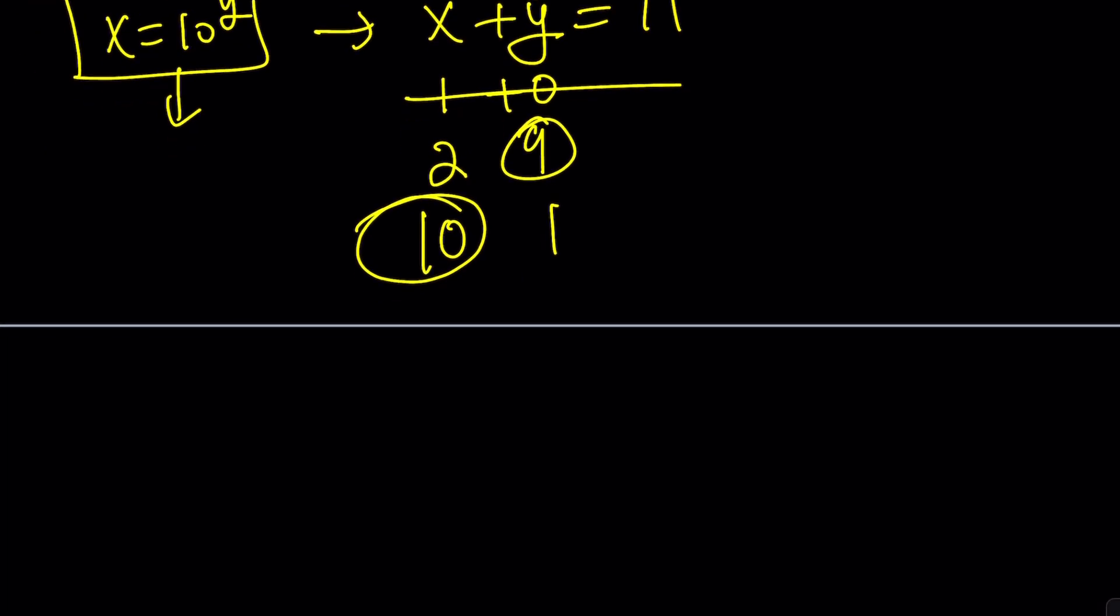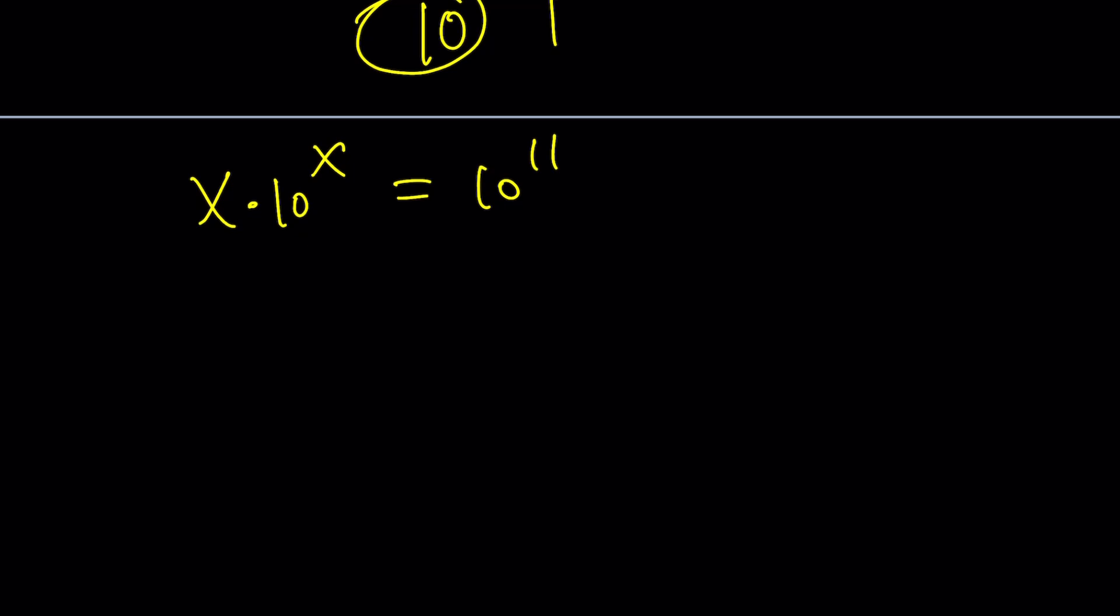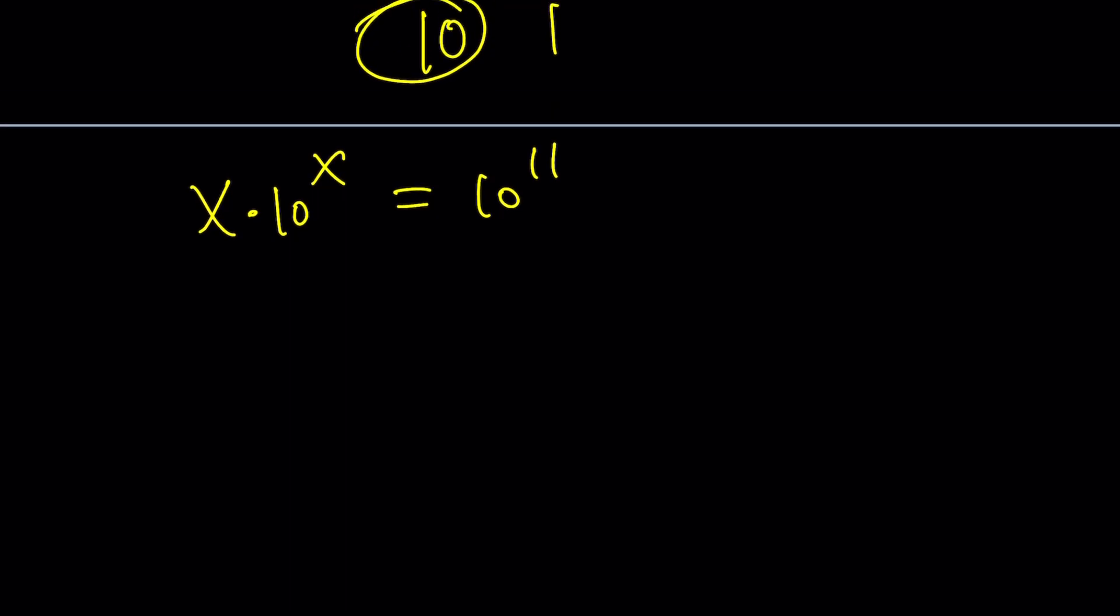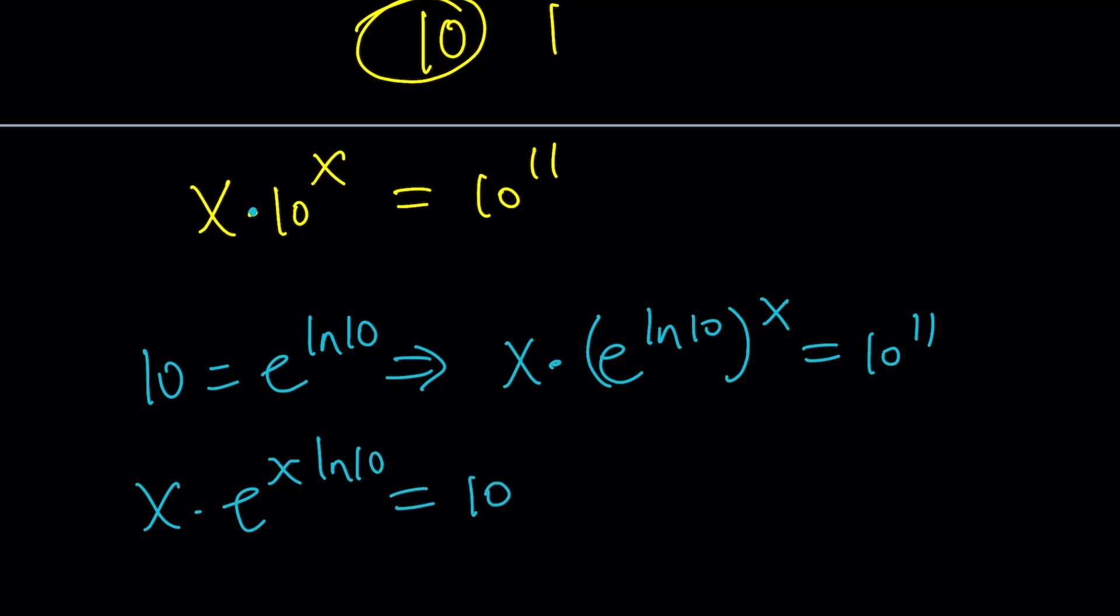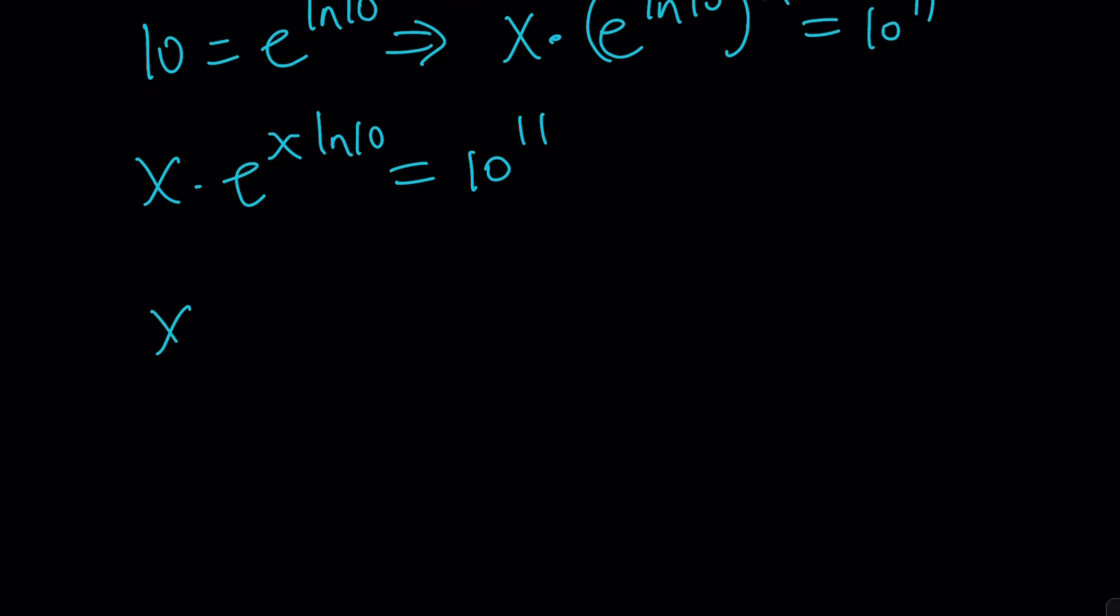But let's go ahead and look at it from another angle. Let's pick it up from here. x times 10 to the x equals 10 to the 11. So we're going to put it in a format where we can kind of apply a special function. Did you guess what it is? Okay. Hopefully you did. I'll tell you at the end. But here's my goal. 10, I'm going to write it as e to the power ln 10 because that's what it is. And it's going to give me x times e to the power ln 10 to the power x equals 10 to the power 11. And then I'm going to multiply the exponents.